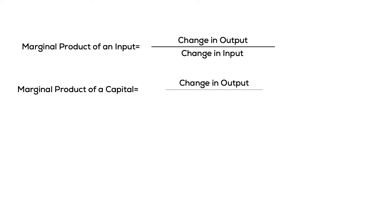What we expect is that the marginal product is positive — as we add more capital, it's going to lead to an increase in output. However, the marginal product is not constant. As we add more inputs, output increases, but each additional input is not producing as much as the previous unit. To illustrate this, we plot the production function: on the x-axis we have capital, and on the y-axis we have output or GDP.